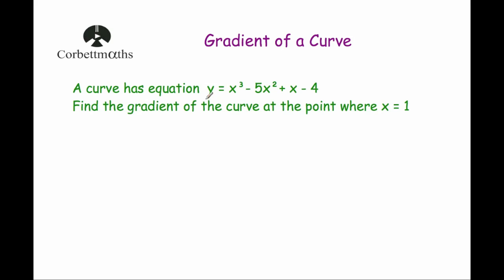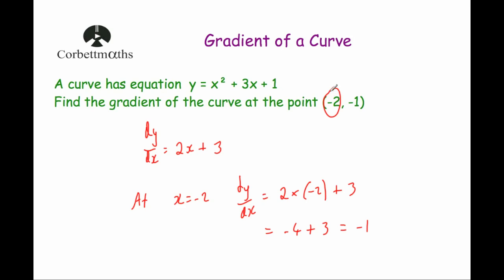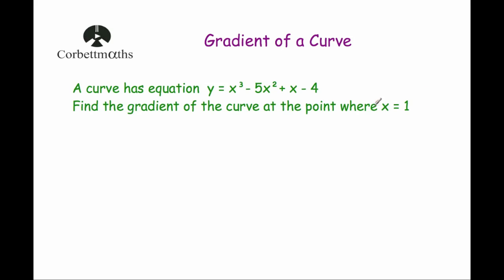Our next question: a curve has equation y equals x cubed minus 5x squared plus x minus 4. We've been asked to find the gradient of the curve at the point where x equals 1. This is a cubic rather than a quadratic, and we've only been given the x-coordinate, which is all we need. Differentiating: dy by dx equals 3x squared minus 10x plus 1.